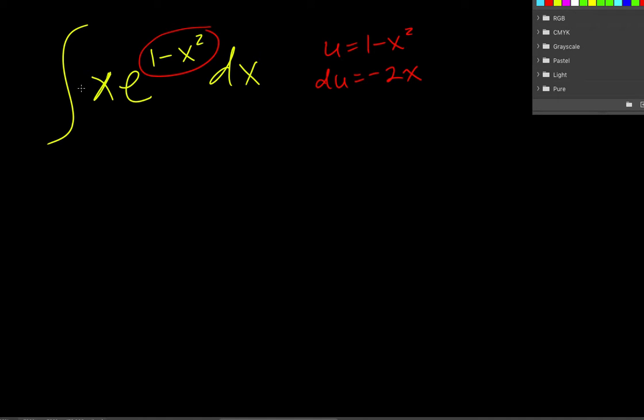Now the problem is there's no negative 2x. But there is an x, and there would be a dx on this too. There's no negative 2. But I can just put a negative 2 in there. But then I can also cancel it by doing a negative 1 half.